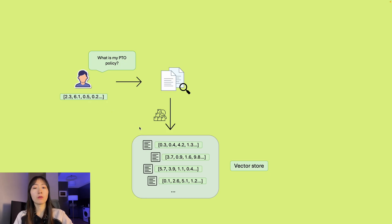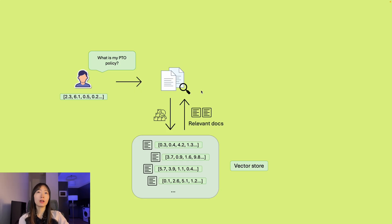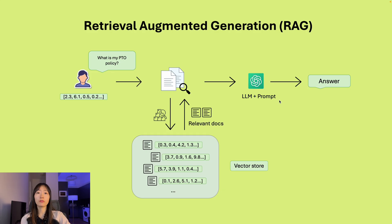And how does it find it? It's pretty simple — you can just use cosine similarity to measure the distance between vectors. Of course, you can also use other metrics too. After you get this chunk, it will be passed to the LLM, and then the LLM will rephrase it a bit and make it more like natural language, and then give the answer. This whole process is called Retrieval Augmented Generation, or RAG for short.